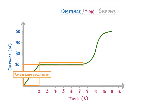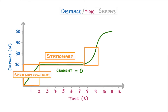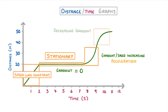Meanwhile a flat line, like this one in the middle, tells us that she's stationary, as the gradient and so the speed are both zero, which means that she's not moving at all. If the line then gets steeper, the gradient and speed must be increasing, and so this part shows acceleration, while a decreasing gradient shows deceleration.